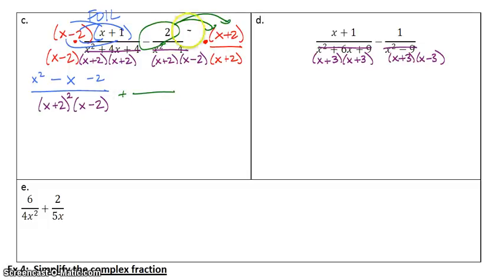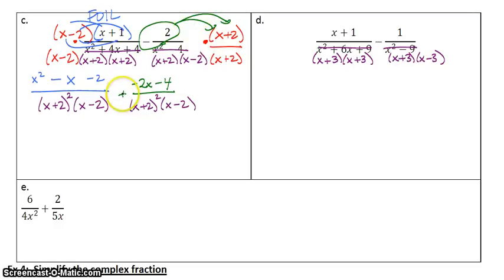I personally like to distribute the subtract sign right away just because I think it saves time. I'm going to say this is a negative 2, and once I've used it and distributed it, now it's just plus. Negative 2 times x is negative 2x. Negative 2 times 2 is negative 4. The bottom is the same as what we had on the left side: x plus 2 squared times x minus 2.